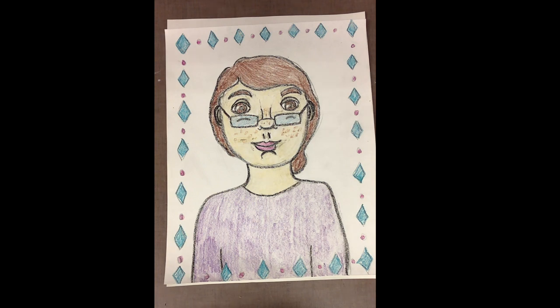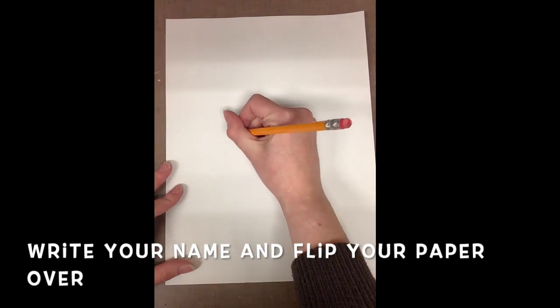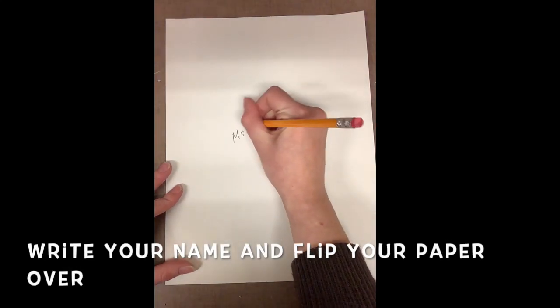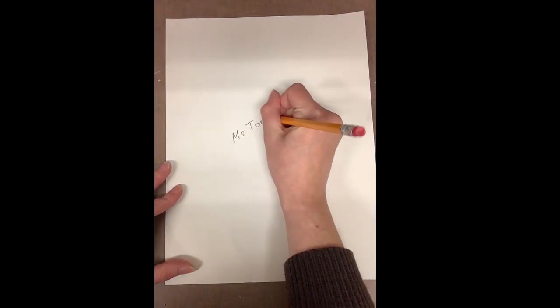Today we will be making a self-portrait. With our self-portrait we're also going to create a patterned frame or border around our portrait. You'll start with a piece of paper and on this piece of paper you'll write your name and then flip your paper over so your name is on the back.